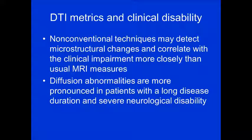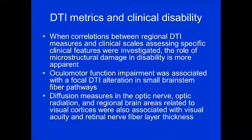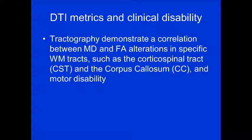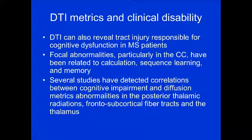Non-conventional techniques may detect microstructural changes correlating with clinical impairment more closely than standard MRI. Diffusion abnormalities are more pronounced in patients with longer disease duration and severe neurological disability. Tractography correlates DTI alterations in specific white matter tracts — particularly the corticospinal tract and corpus callosum — with motor disability and cognitive dysfunction. Even in the optic nerves, DTI alterations in oculomotor function impairment have been observed. Corpus callosum abnormalities specifically have been linked to calculation, sequential learning, and memory difficulties.